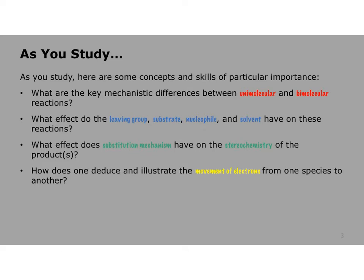We're also going to deal with stereochemistry. When we look at these substitution reactions, once we have a mechanistic understanding of them, what's the outcome of these reactions in a three-dimensional sense? And then finally, how do we deduce and illustrate the movement of electrons throughout the course of these reactions? In other words, how do we write the mechanisms?